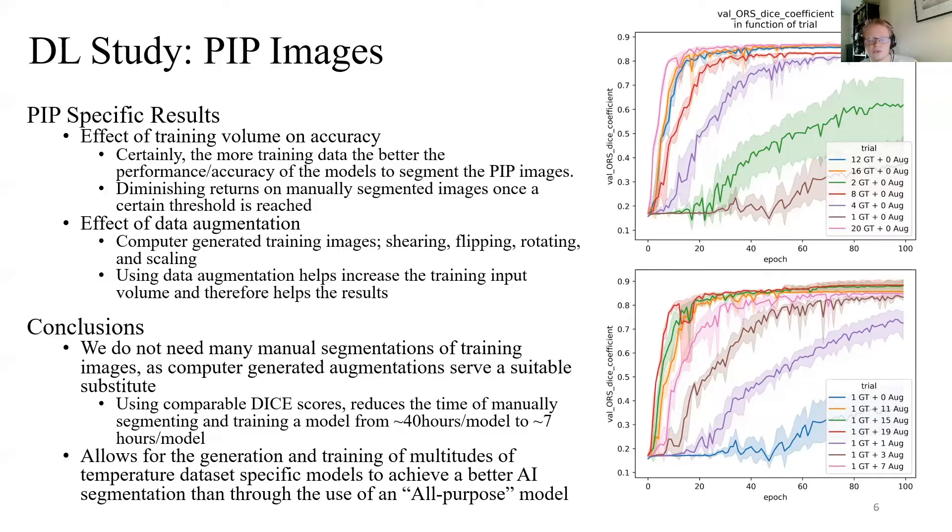Comparing the achieved dice scores by the models, we can see that the 12 ground truth model has a comparable dice score to that of the one ground truth and 11 augmentation curve, despite taking roughly five times the amount of time to segment. These findings allow for the training of multiple specialized models for each of the 39 temperature datasets rather than having to use one general model for all the different datasets.